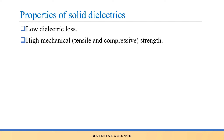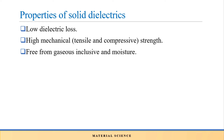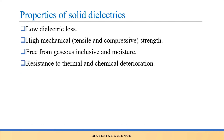The next property is high mechanical strength. It should also be free from gaseous inclusions or moisture. If an insulating material is used over a conducting part, it should be free from moisture content as well as gaseous inclusions, as their presence prevents proper insulation. Next is resistance to thermal and chemical deterioration.